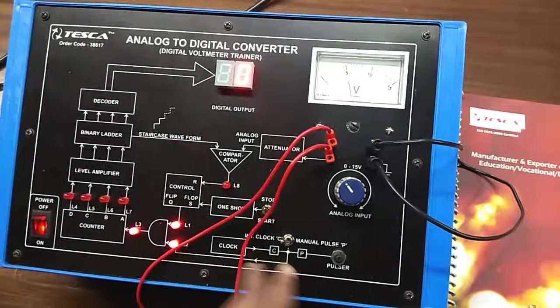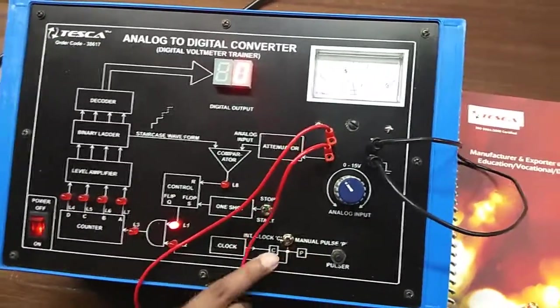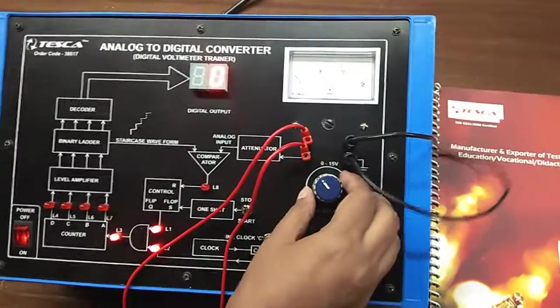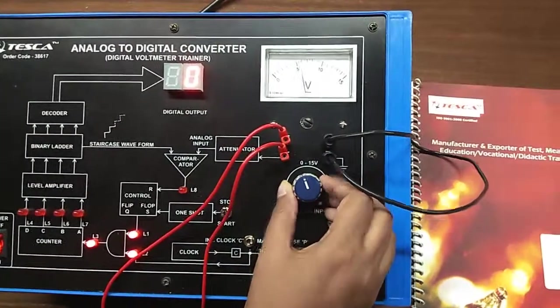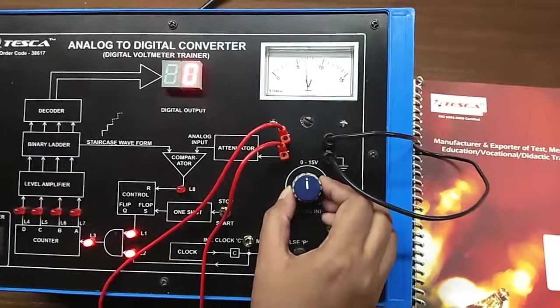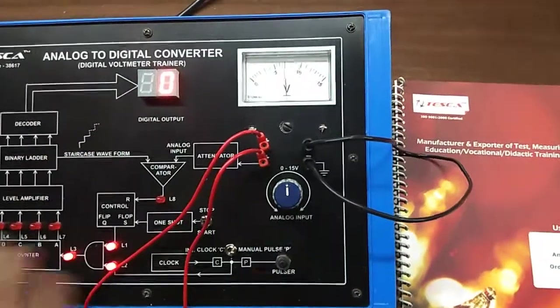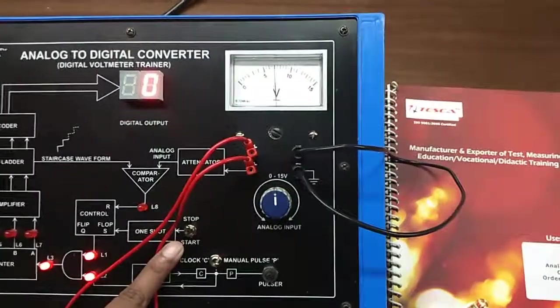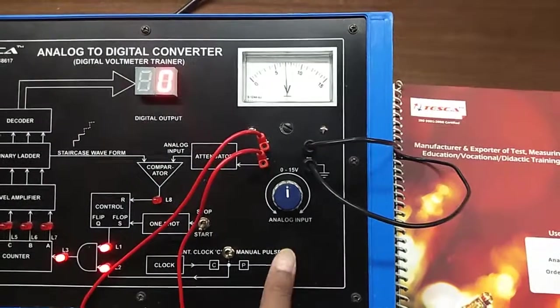Also, select this clock switch position to P. Set this at a value. Select start. Now we need to give pulses manually.